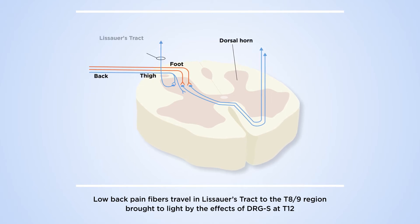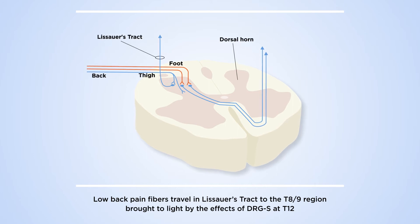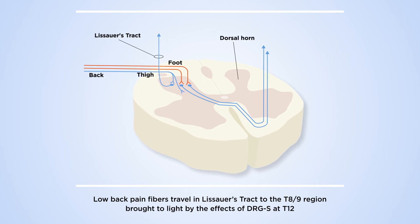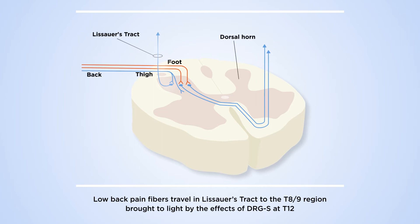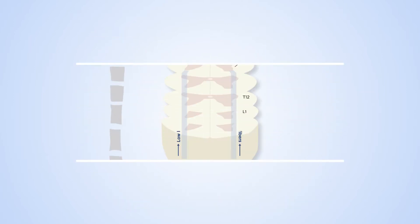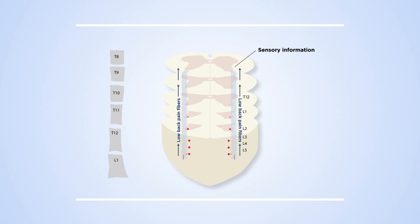Neurons in the lateral aspect of the dorsal horn have been shown to leave the dorsal horn and enter Lissauer's tract. The researchers believe that the low-back neurons enter the dorsal horn at their corresponding level, but then exit and enter Lissauer's tract. Low-back sensory information leaves the dorsal horn at each lumbar level and travels together in Lissauer's tract, where they converge at the T8 and T9 level.